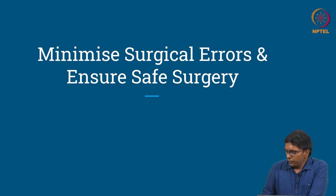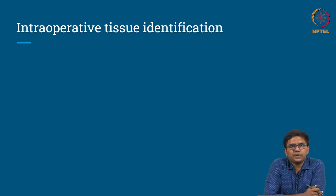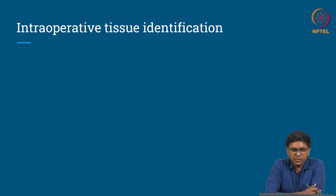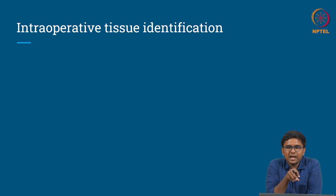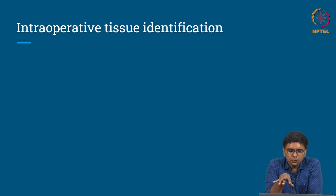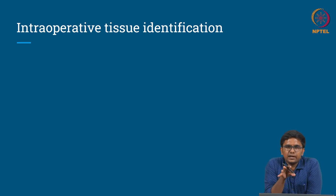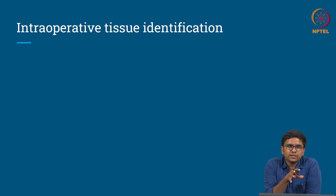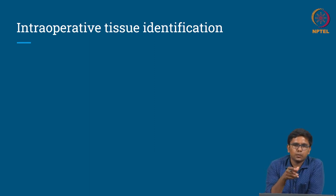So moving on to the topic: what is intraoperative tissue identification? The word intraoperative means things that happen during the surgery. During the course of surgery, it is vital for the surgeon to correctly identify the tissue. Only correct tissue identification can help the surgeon decide what to cut and what not to cut, what to take out and what not to take out.